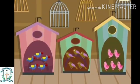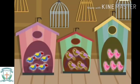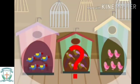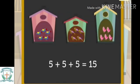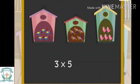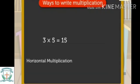Let us take one more example. There are three bird houses. There are five birds in each house. How many birds are there in all? To get the total number of birds, we add the number of birds in all three bird houses: five plus five plus five equals fifteen. That is, three times five is equal to fifteen. Using the multiplication sign, we write it as three multiplied by five is equal to fifteen. So there are fifteen birds in all.